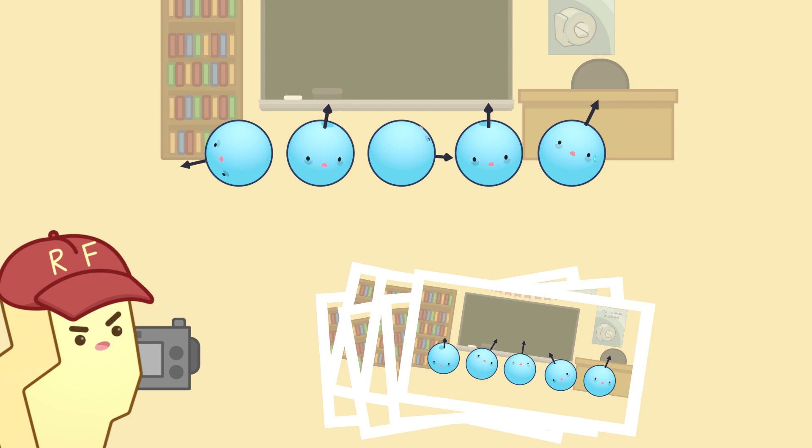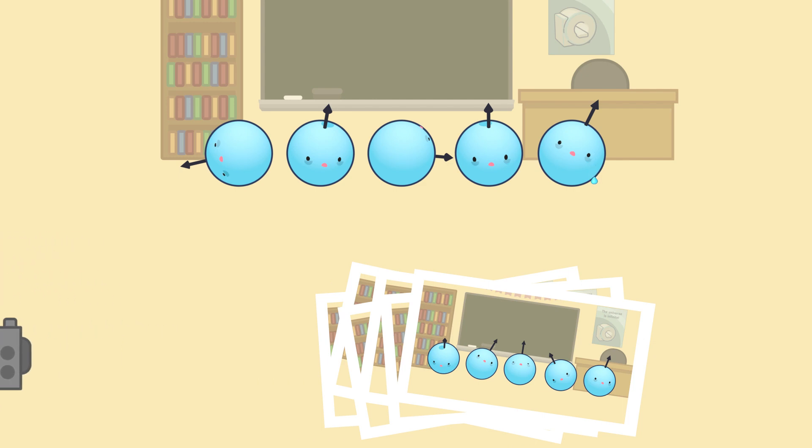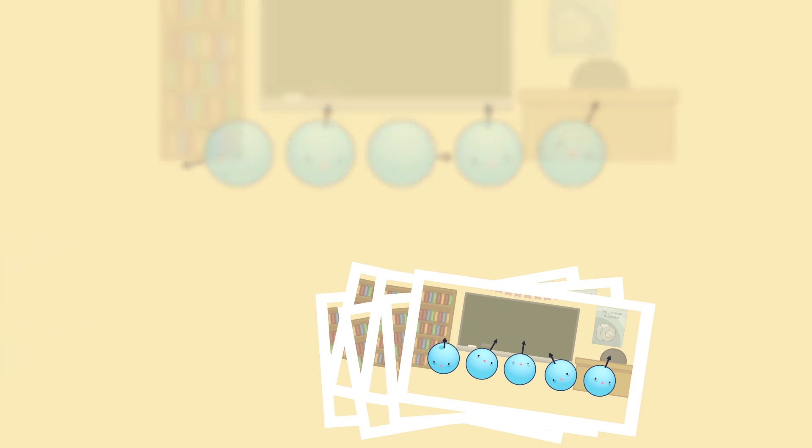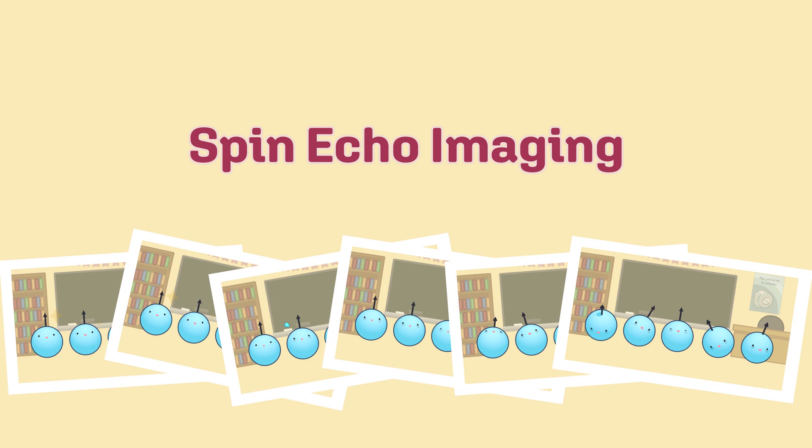Once that happens, the sequence must be restarted again with another 90-degree pulse. Imaging in this manner is called spin echo or fast spin echo imaging.